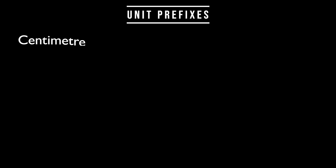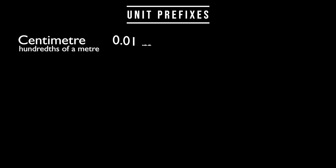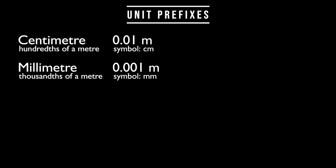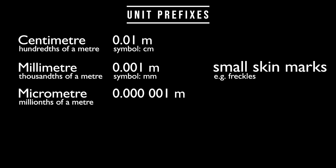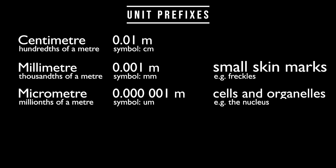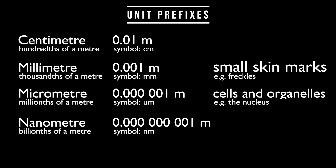So, this completes our journey, and we have met four unit prefixes on the way. To recap: the centimetre is a hundredth of a metre; the millimetre is a thousandth of a metre, and the scale of freckles and small marks on our skin. The micrometre was next, at one millionth of a metre, and the scale of our cells and the nucleus within them. The nanometre, one billionth of a metre, completed our journey and is the scale of atoms and molecules.